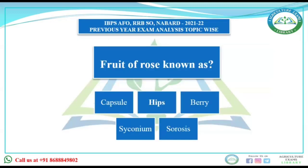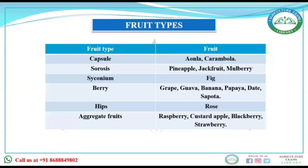Our next question is: the fruit of rose is known as — options are capsule, hips, berry, syconium, and sorosis. Fruits like amla and carambola are capsule type. Pineapple, jackfruit, and mulberry are sorosis type. Fig is syconium. Grape, guava, banana, papaya are berry type.